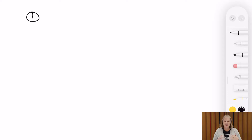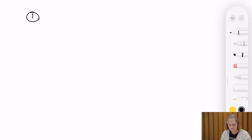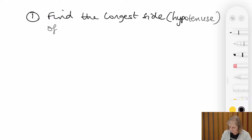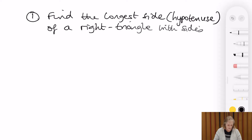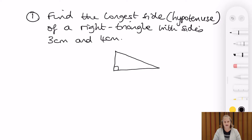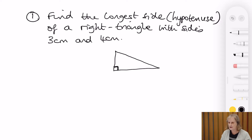So the first question — and I'm writing it as you might see it in a test, with the kind of wording that would be used — we want to find the longest side, which is also known as the hypotenuse, of a right triangle with sides three centimetres and four centimetres. First thing we need to do is draw a diagram and label it correctly. We can only use Pythagorean theorem with a right triangle, so one of the angles is 90 degrees, indicating it's a right angle.